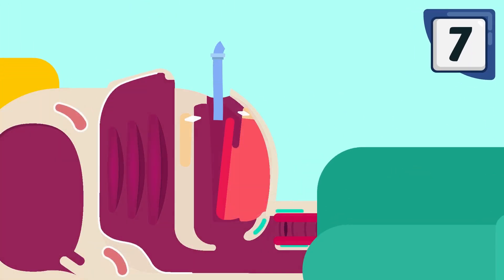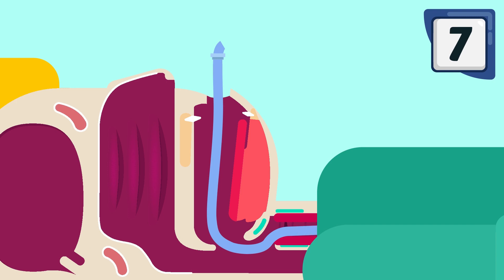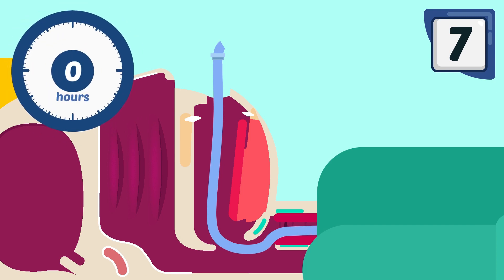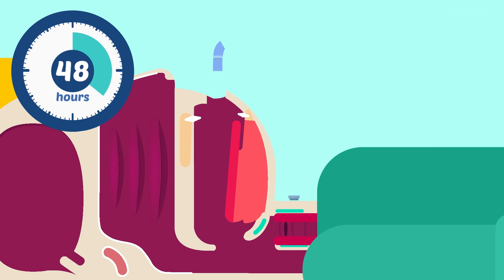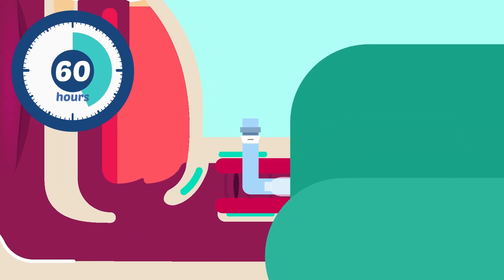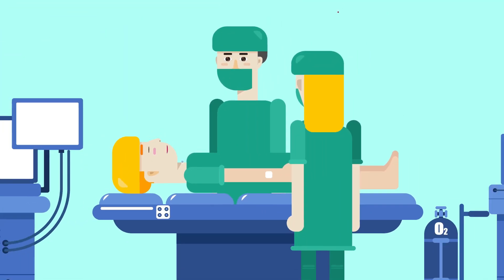7. Intubation or tracheostomy is done should respiratory obstruction increase in spite of the above measures. Tracheostomy is done if intubation is required beyond 72 hours. 8. Assisted ventilation may be required.